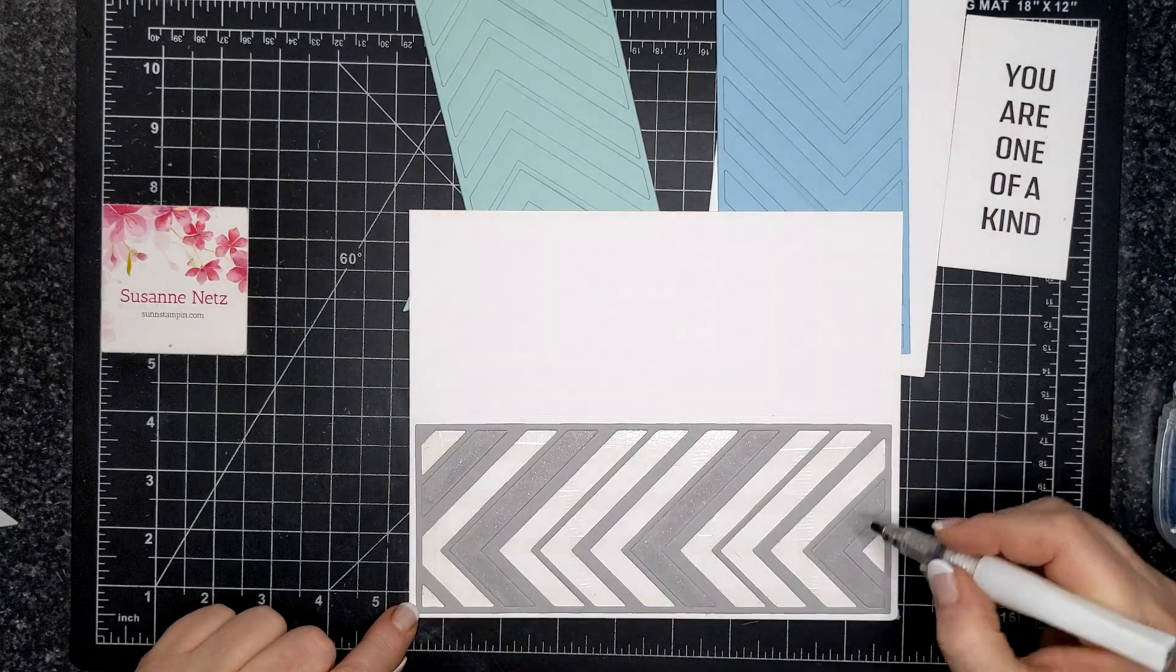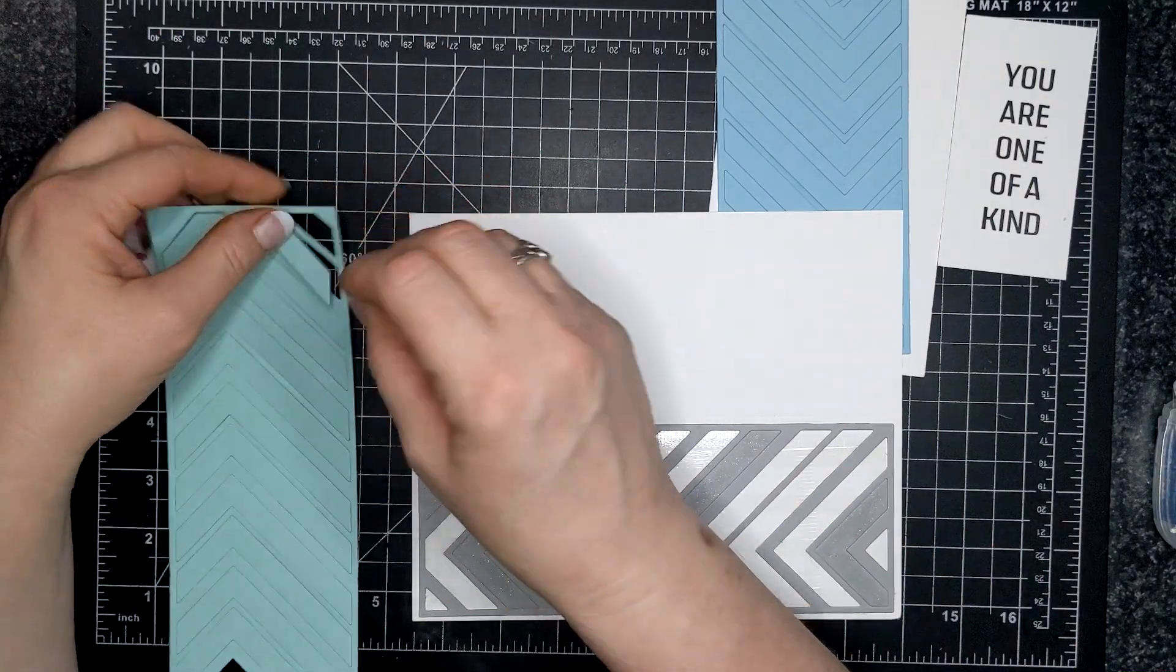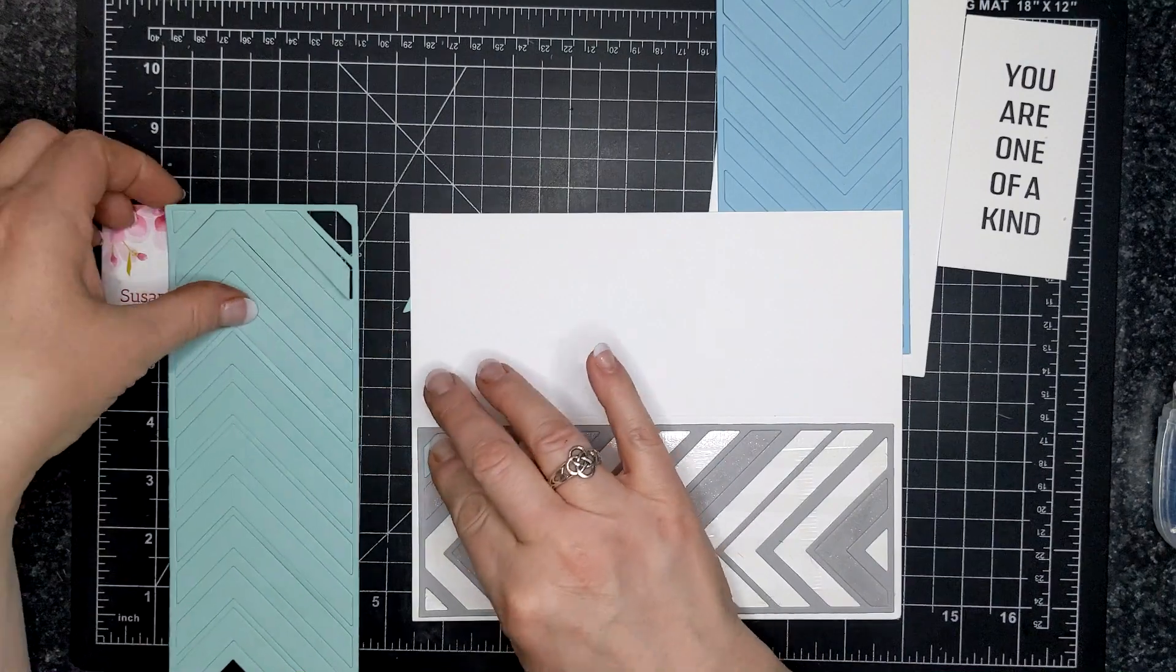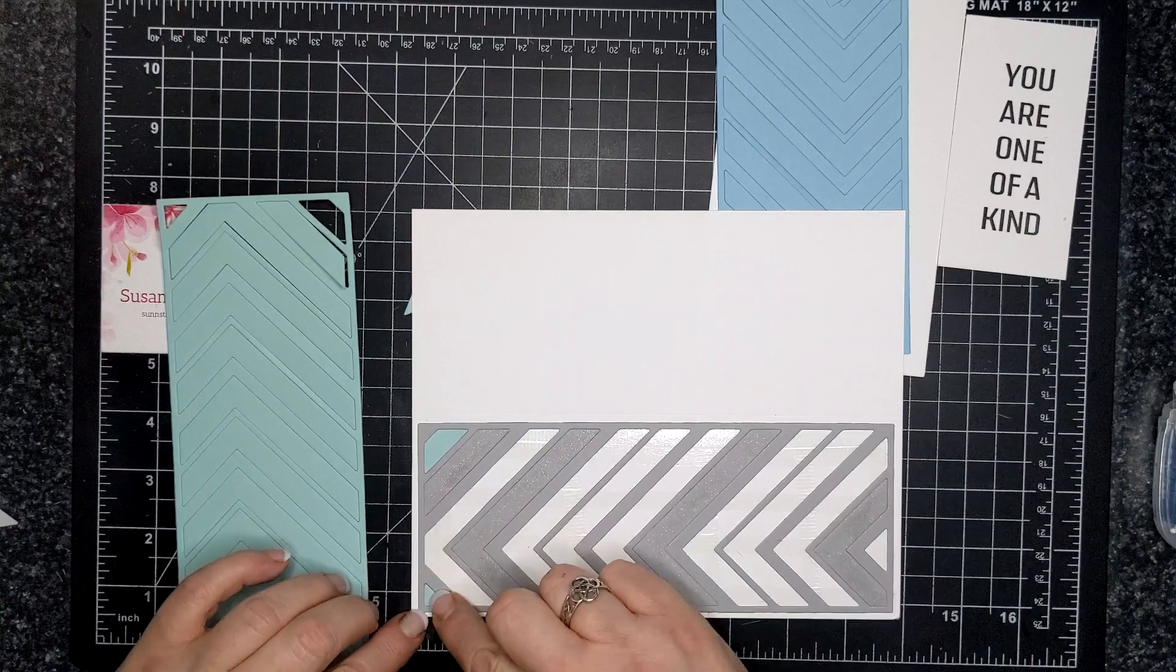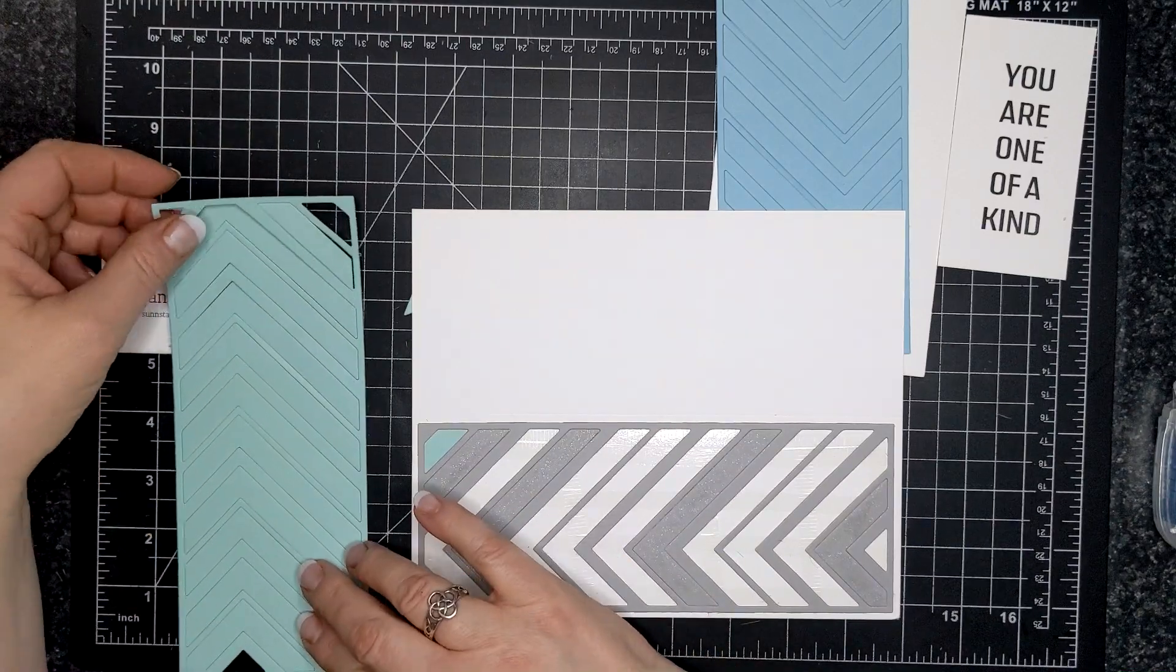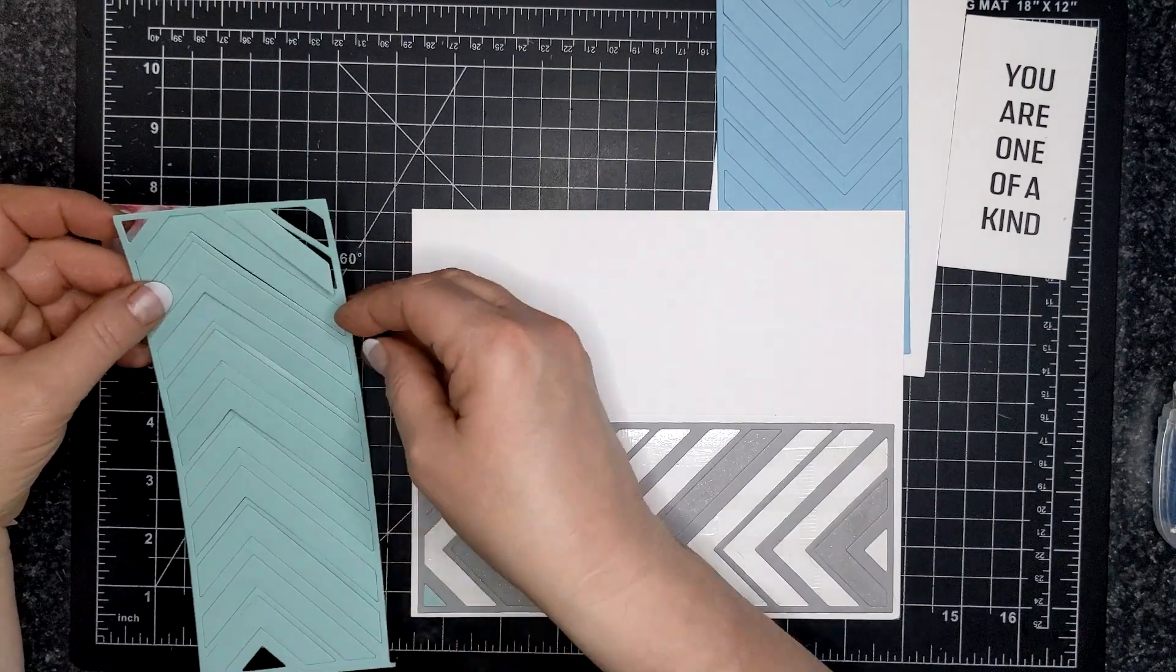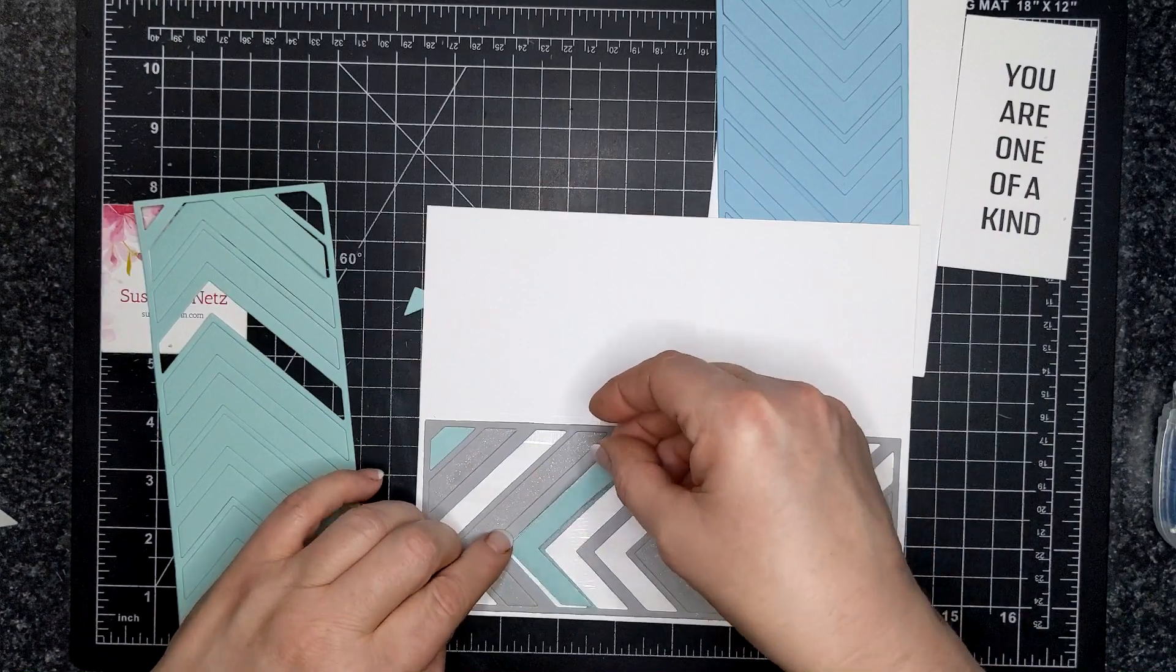And now I'm just placing in, this is the mint macaron, and I'm going to just pick and choose. It was really nice that this particular die cut, the negative pieces sort of stuck in there, kept in the positive side of the die cut so that I was able to sort of just count the numbers and pick the ones that I wanted.